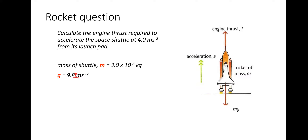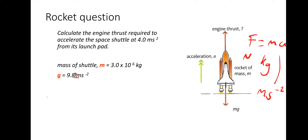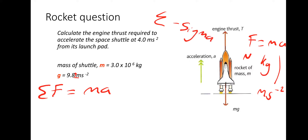Newton's second law, which you'll know from GCSE, is simply F equals ma, where force is measured in newtons, mass in kilograms, and acceleration in meters per second squared. At A-level, however, you'll probably see this version: the sum of the forces is equal to ma. The sigma symbol — that's a Greek letter — means 'the sum of.'